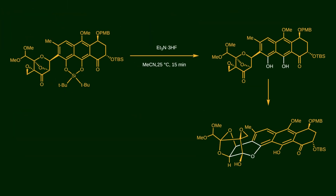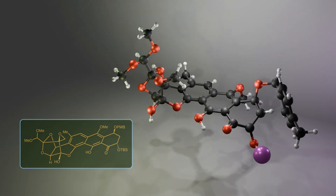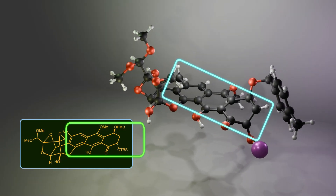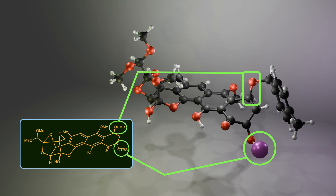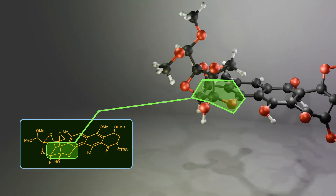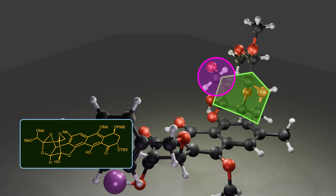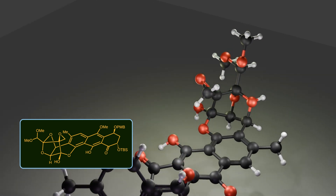Now it's time to get rid of the silyl protecting group. Treatment with triethylamine trihydrofluoride leads to selective cleavage of the di-tert-butylsilyl group. After that, it undergoes spontaneous hemiketal formation by attack of the alcohol on the carbonyl group. Let's review what we've created so far: here is the anthraquinone core with the correct installation of two protected alcohols, here is the boat-shaped six-membered ring resulting from the last step, and here is the oxabicyclic core with the alkylating warhead.